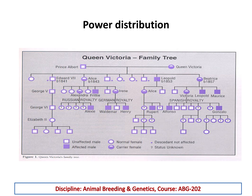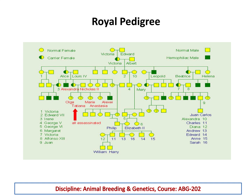This is the family tree of Queen Victoria indicating the haemophilia situation. A more expanded version shows that Alexis, indicated in red, was the affected child. Alexis had three sisters, and we have no idea about their status as carriers or affected individuals. These slides essentially indicate the importance of genetics and its impact on daily life.